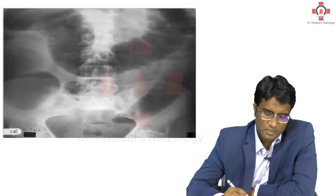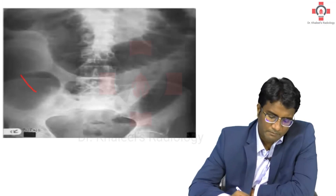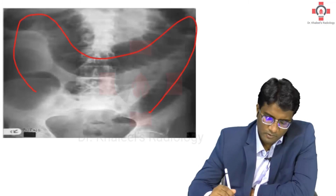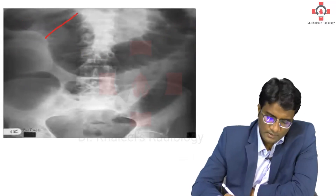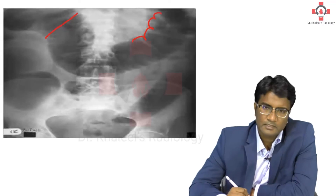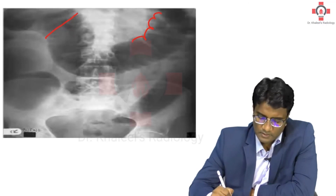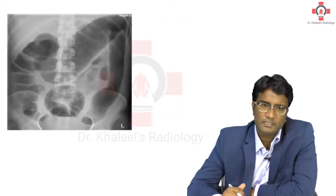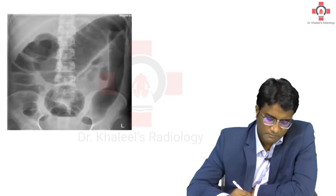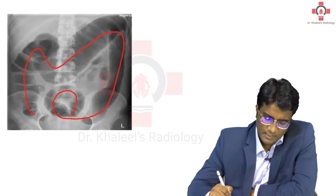Now, is this small bowel or large bowel? Identify the peripheral location — the bowel loops are of very large diameter and you can see haustra markings. All of these features suggest large bowel obstruction. You can see peripheral loops, dilated bowel loops, and haustra markings.